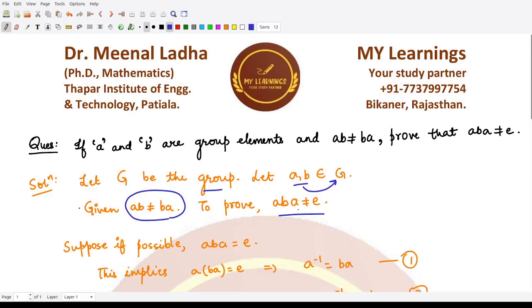Now what we do: we will be proving the result using the method of contradiction. How? We will assume the opposite. We will assume that this thing aba is equal to e, if possible we assume this thing.